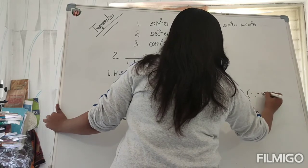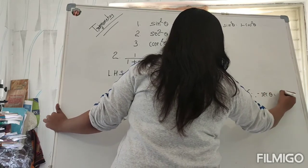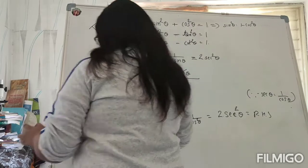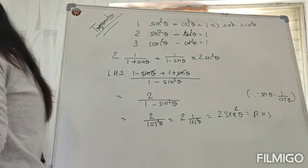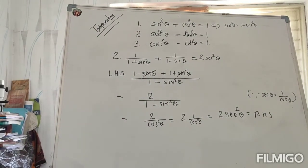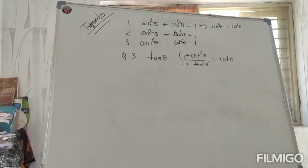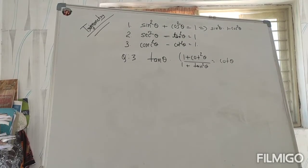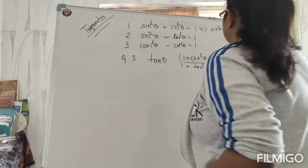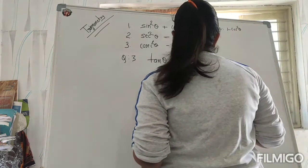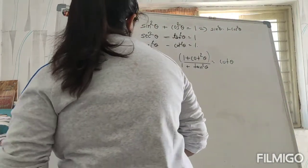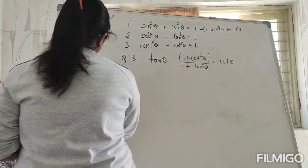sec θ = 1/cos θ. Question 3: tanθ × (1 + cos²θ) / (1 + tan²θ) is equal to cosθ. So first we will take our LHS.